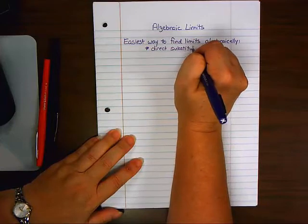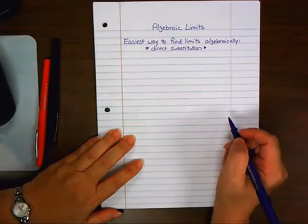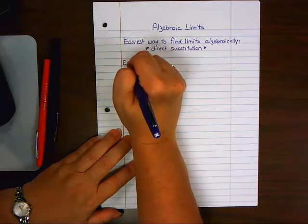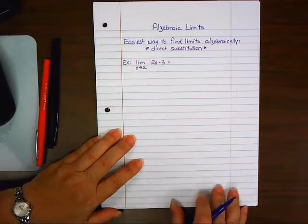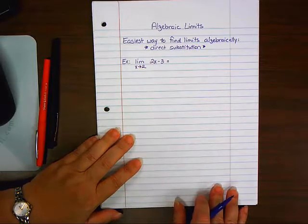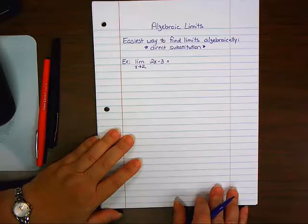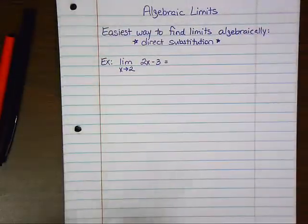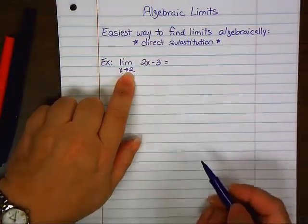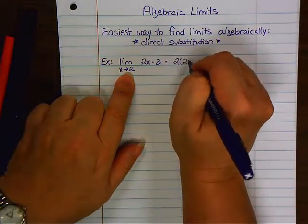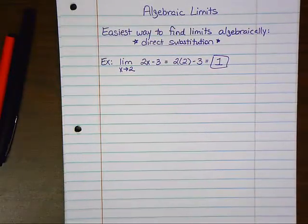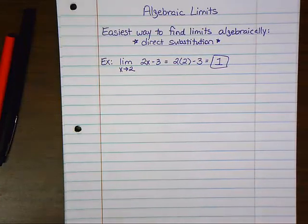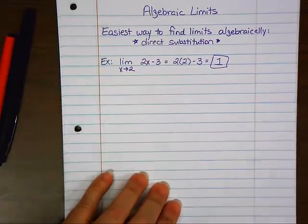So the mathematical term for plug it in is direct substitution. This is the quickest and easiest way, if you can, to find a limit. For example, the limit as X approaches 2 of 2X minus 3. Can you substitute this limit value into that function and get an answer? Yes, you can. That's what you do. 2 times 2 minus 3 equals 1. That's your limit. You're done. The ones we did yesterday were harder than this.